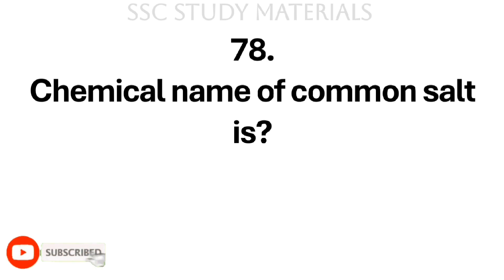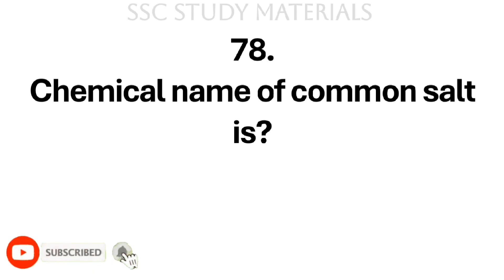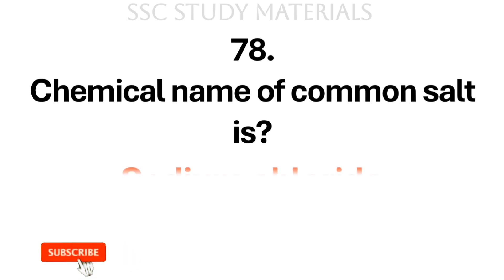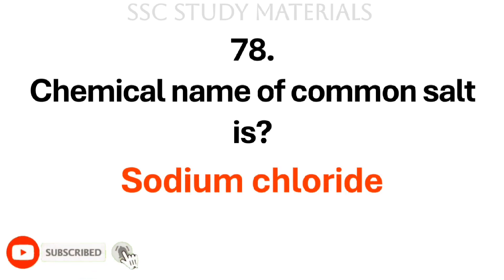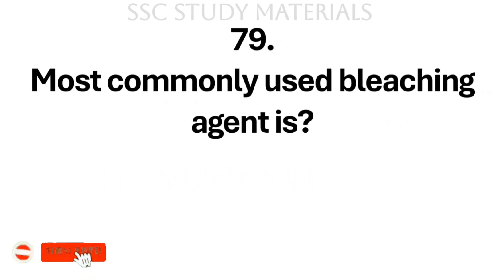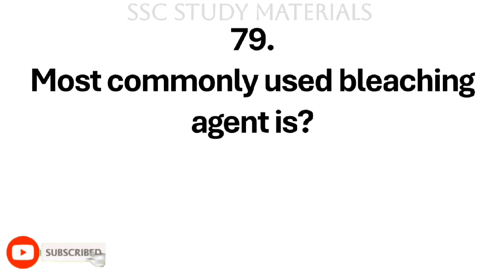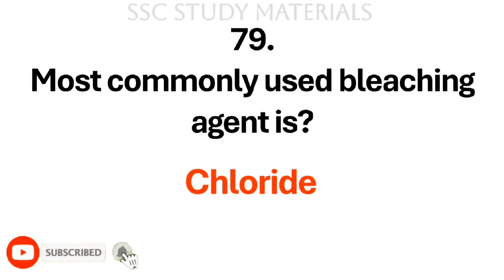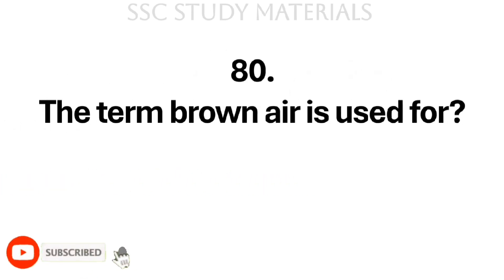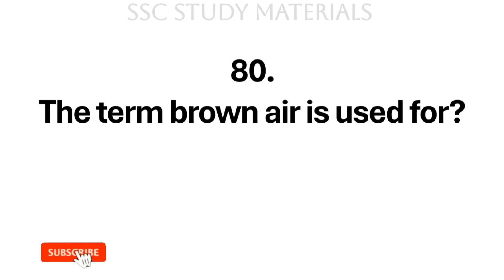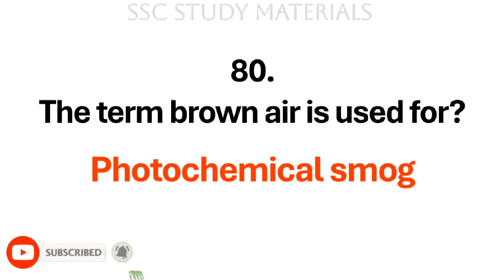Question No. 78: Chemical name of common salt is? Answer: Sodium chloride. Question No. 79: Most commonly used bleaching agent is? Answer: Chlorine. Question No. 80: The term 'brown air' is used for? Answer: Photochemical smog.